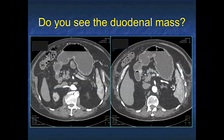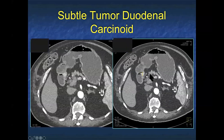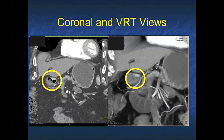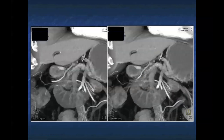Looking at this case — do I see a duodenal mass? This was read initially as negative. If you pick the best area, that's a one centimeter enhancing lesion, which was a carcinoid. You can pick it up on the axials if you're lucky, but look at the coronal and the volume rendering — it's a very flat lesion. On an axial, it can be really hard to see, but on the coronal, whether NPR or volume rendering, it makes it very easy to see. Lesions that are flat are hard to see unless you go to other planes.